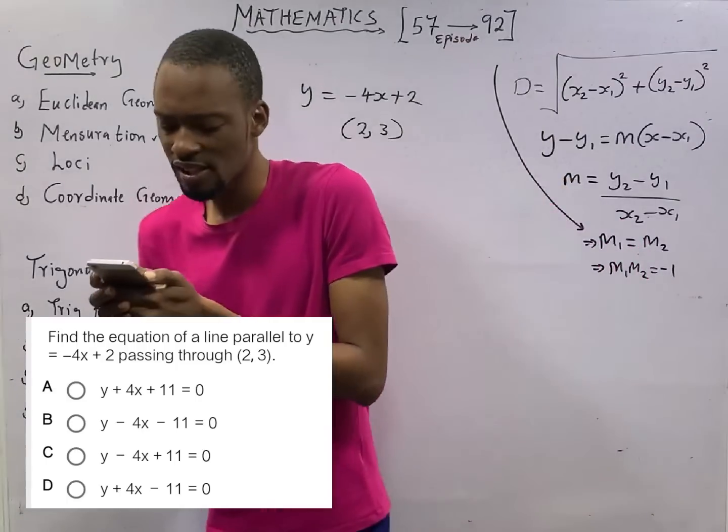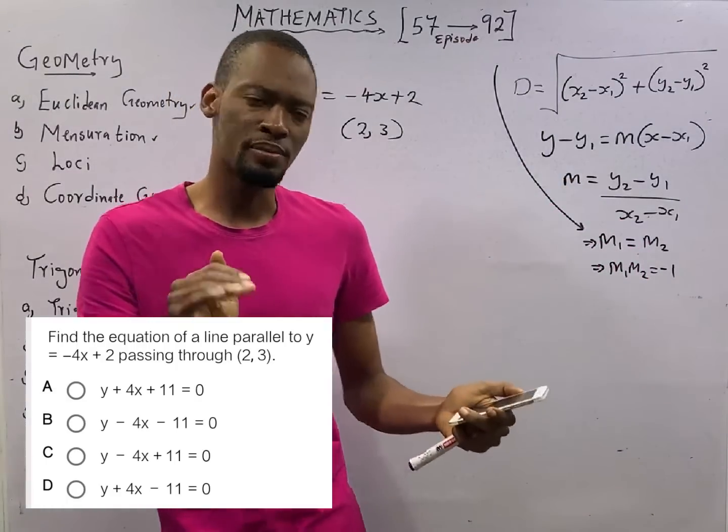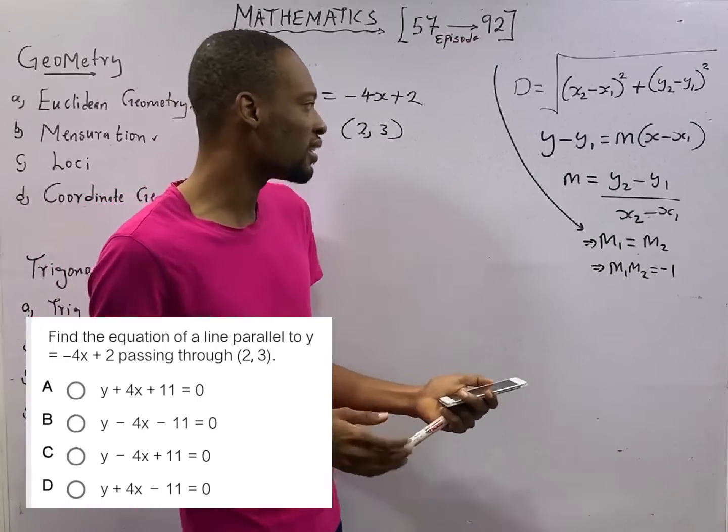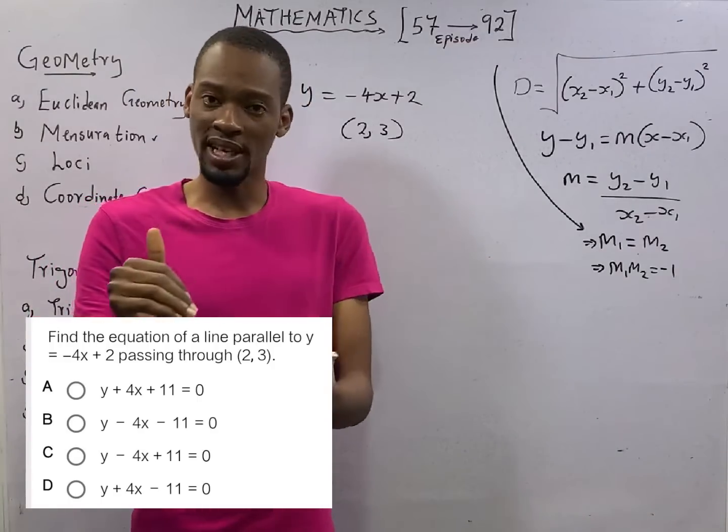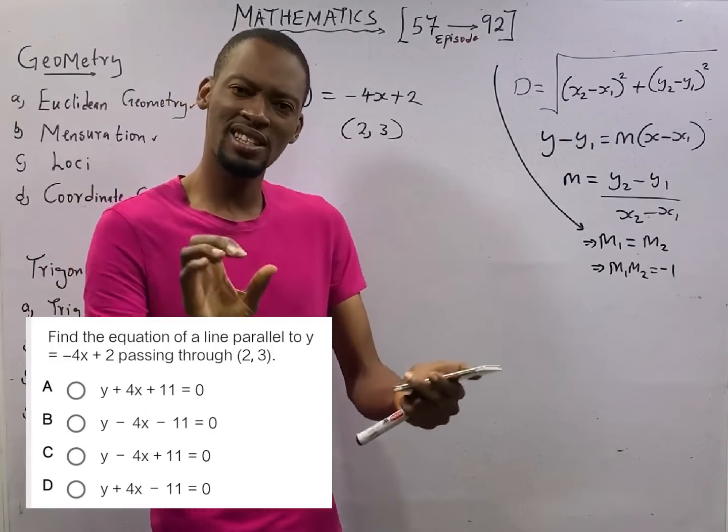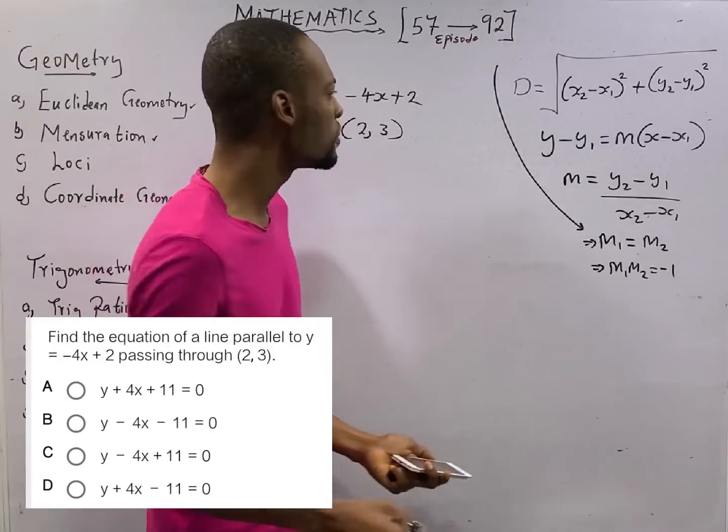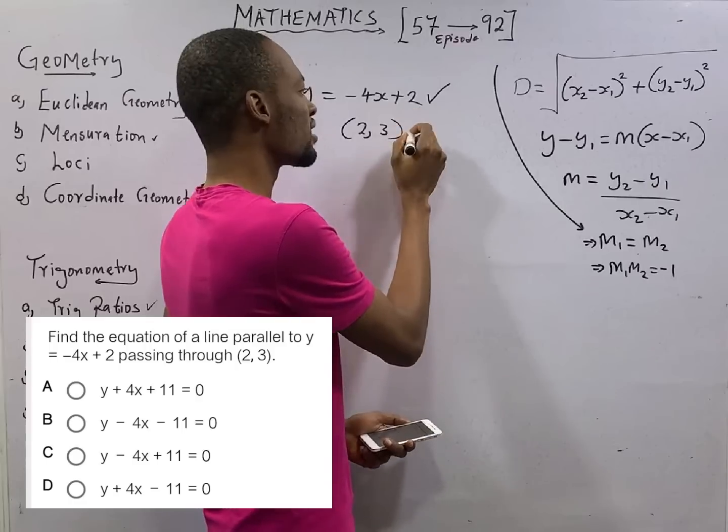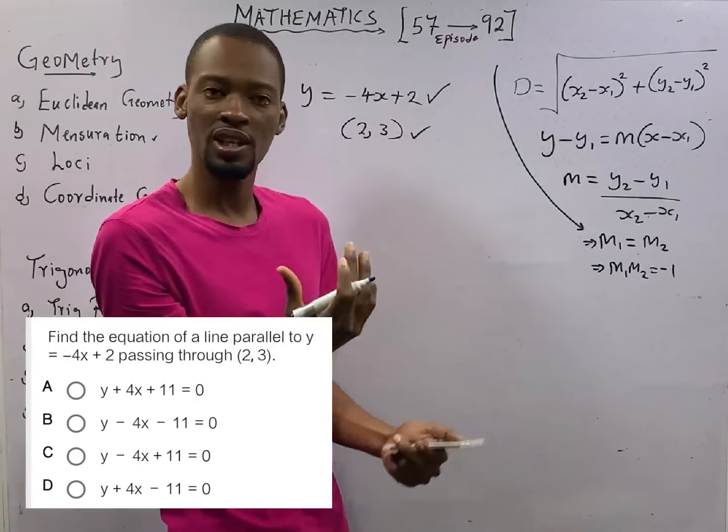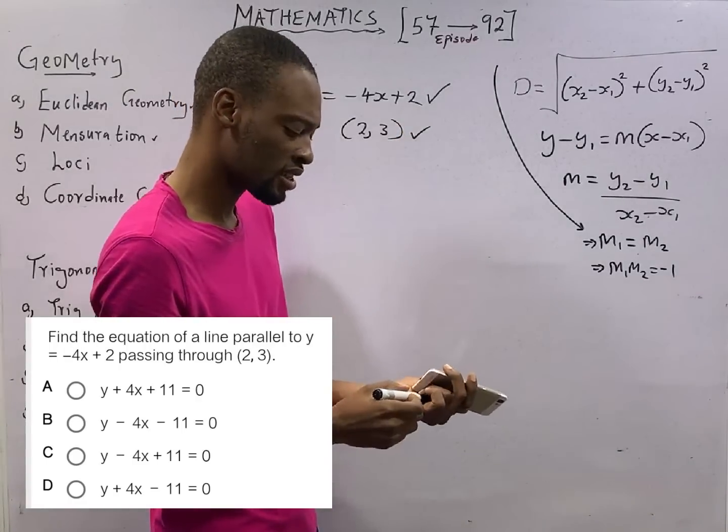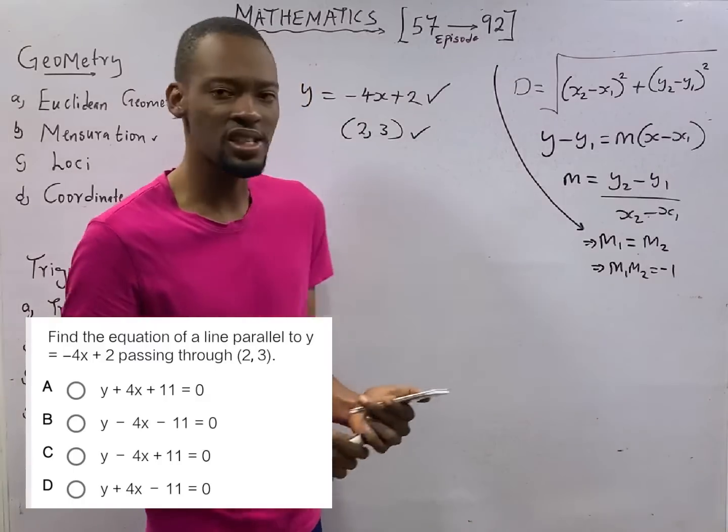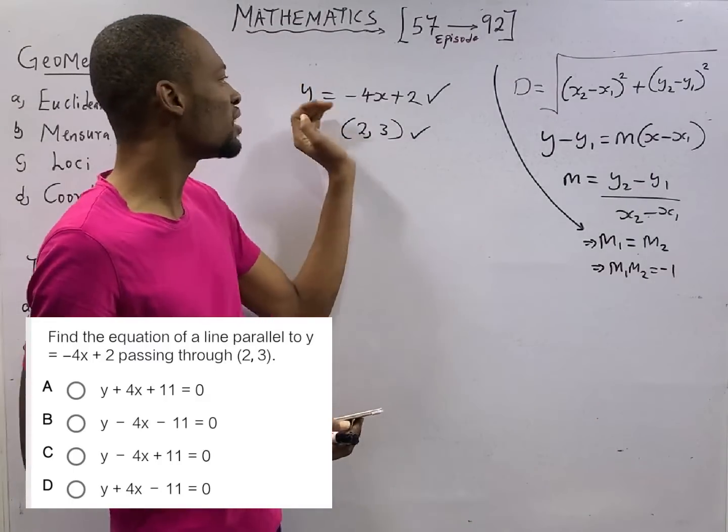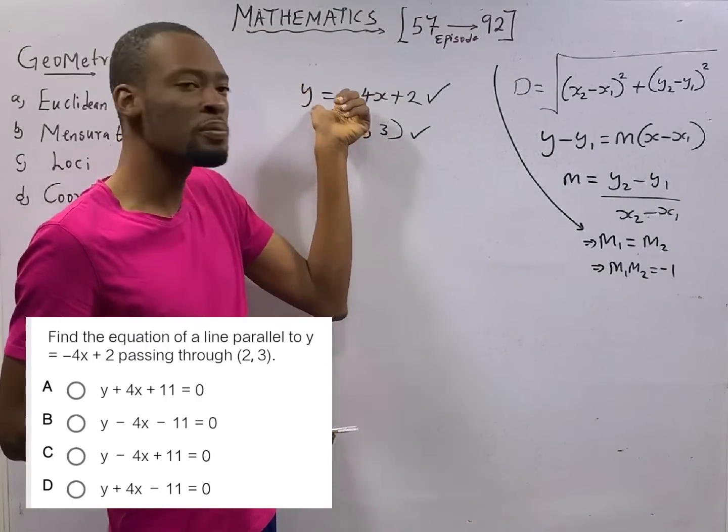Ladies and gentlemen, for parallel lines, their gradients are the same. If two lines are parallel, the gradient of the first line is the same as the gradient of the second line. Which means the gradient of this line will be the same as the gradient of this line. In some cases, the equation of line they will give you, y will not be subject of formula.